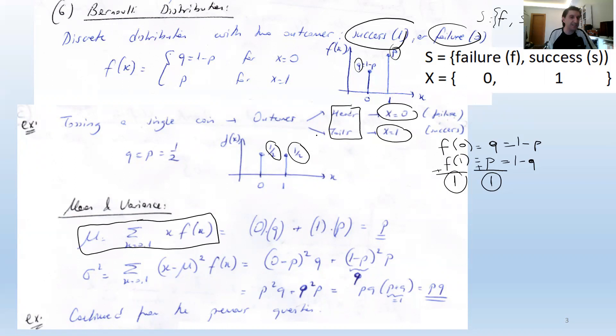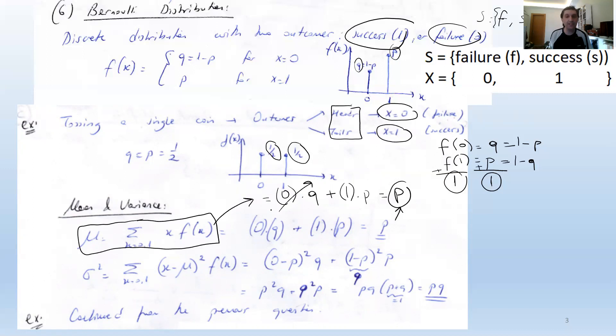For the mean of a Bernoulli distributed random variable, we use the expected value equation. Each outcome is multiplied by its probability: 0 times q (failure probability) plus 1 times p (success probability). The result is that E[X] = p.